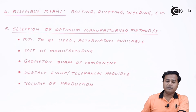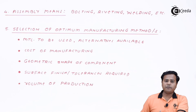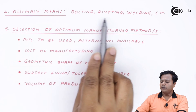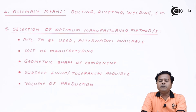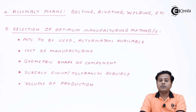The next aspect is assembly. Many products don't come in one piece — there has to be some assembly. In that case, bolting, riveting, welding, and many other fastening methods can be used. These alternatives should be taken care of during the machine design procedure itself so that the materials and components will be selected accordingly.